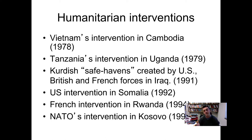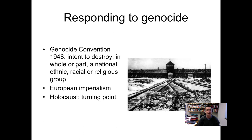We had the US intervention in Somalia in 1992, the French intervention in Rwanda — which came a bit too late, as the genocide had already occurred — and then NATO's intervention in Kosovo in 1999.